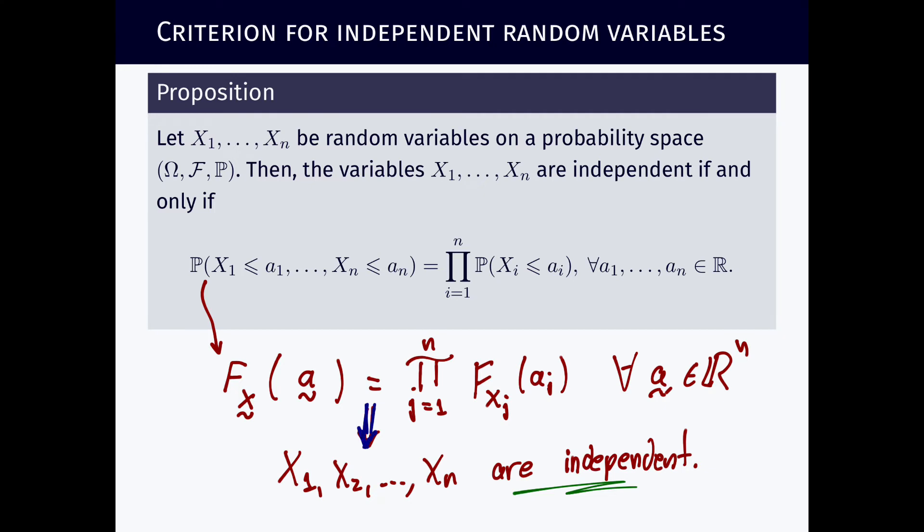It is enough to show that probabilities will factorize for sets as simple as this to conclude that probabilities factorize for any Borel sets. And how can we prove this proposition? The proof of this proposition will use our good old friend, uniqueness theorem and pi systems.